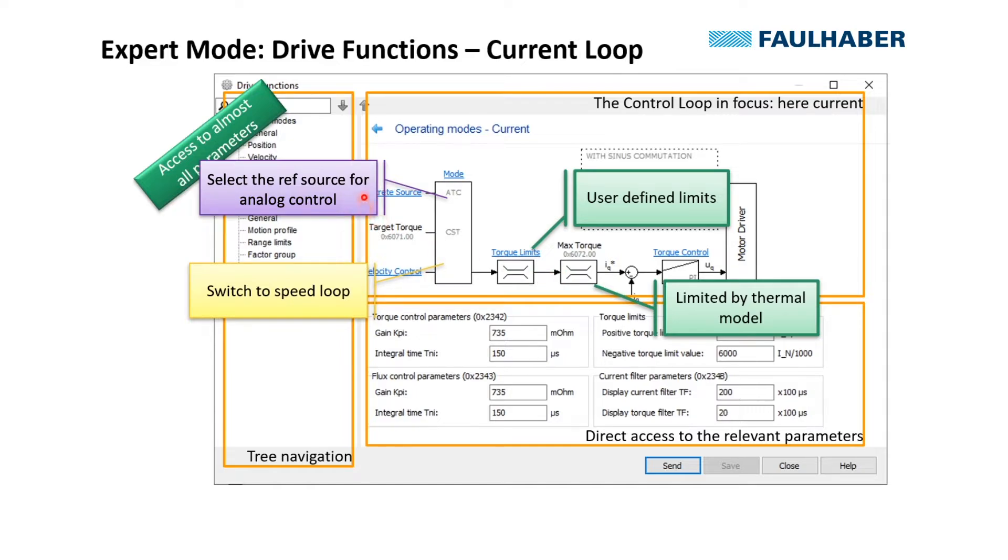On the left side you can always select either a discrete source for the reference, so here for example an analog input for the torque, or switch to the next loop, which here is the speed loop.